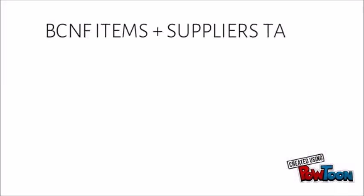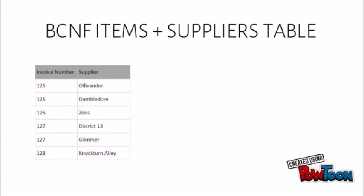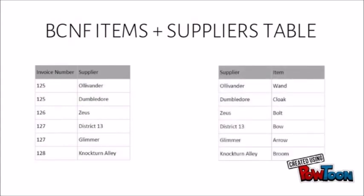Since an invoice can have many items and several suppliers for each item, having the invoice number as the only primary key is not enough. To convert the table to BCNF, we separate the item column from the original table and create a new table with supplier and item as fields, and link the two tables together using the supplier attribute. The schema is now in Boyce-Codd normal form.